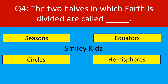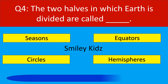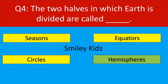Question number 4. The two halves in which earth is divided are called. Your options are seasons, equators, circles, hemispheres. Your time starts now. Your time is up. The correct answer is hemispheres. The two halves in which earth is divided are called hemispheres.